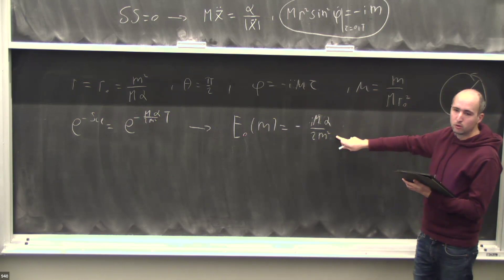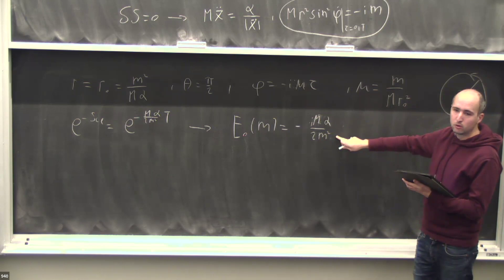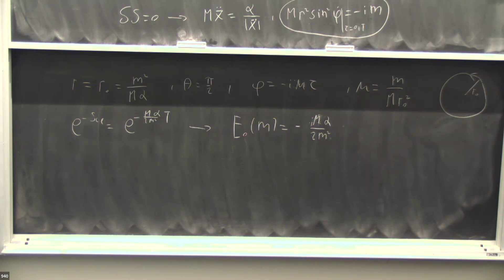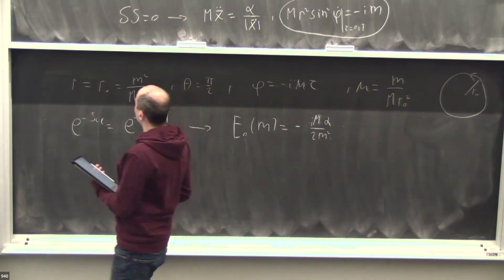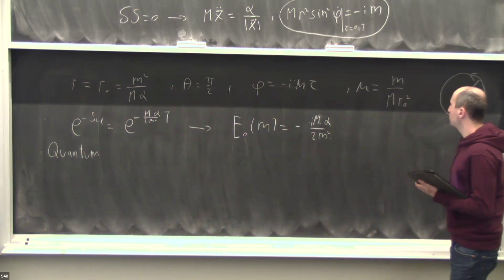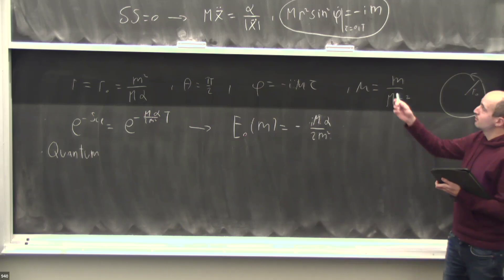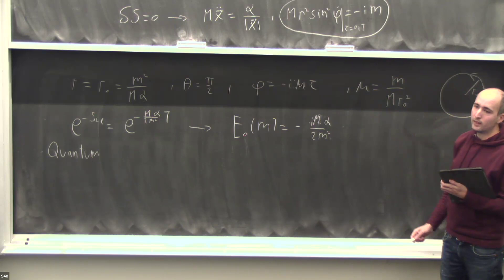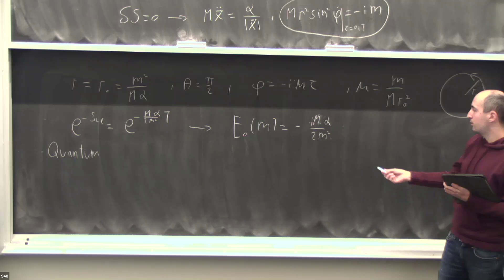This is not exactly right — there should be an m plus one, so there are going to be corrections. Here is where semi-classics will come in because this correction is subleading. At leading order, E_0 of m equals minus m alpha over a_0 squared. Remember the Bohr radius. The quantization of m comes from the fact that phi is 2pi-periodic — m is the momentum conjugate to phi and phi is 2pi-periodic. If m were not quantized, the integral would vanish.